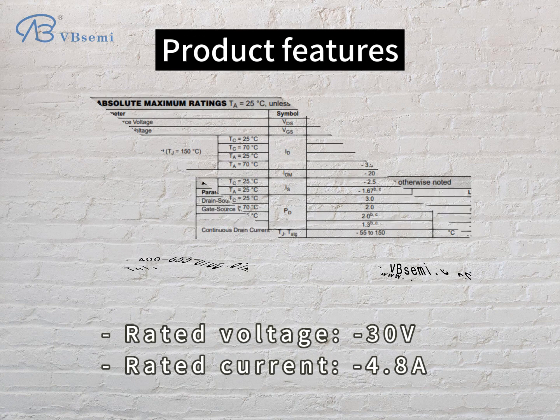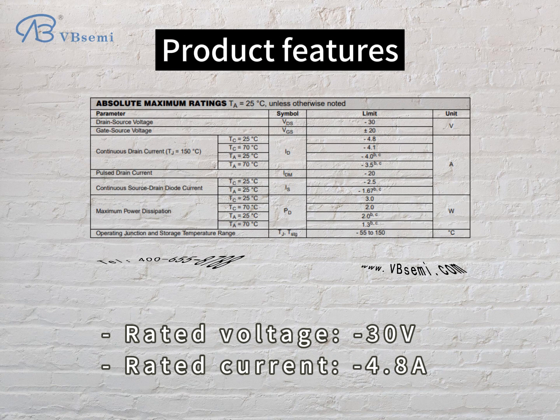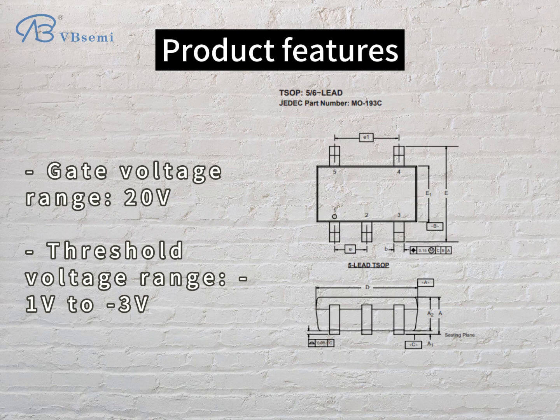Rated voltage: -30V. Rated current: 4.8A. Gate voltage range: 20V. Threshold voltage range: -1V to -3V.